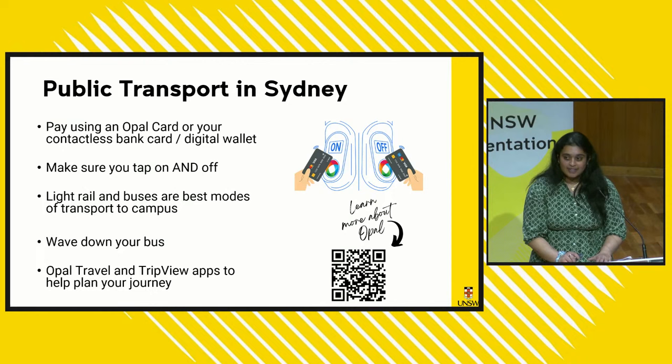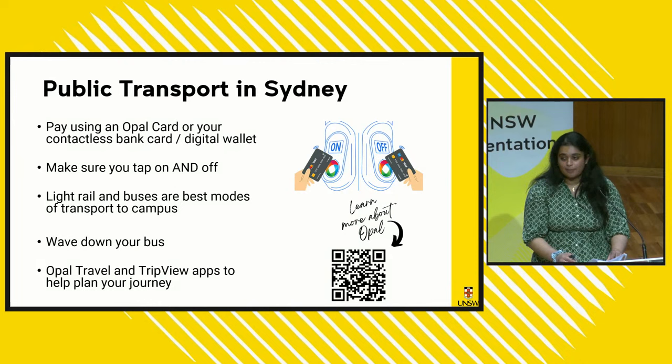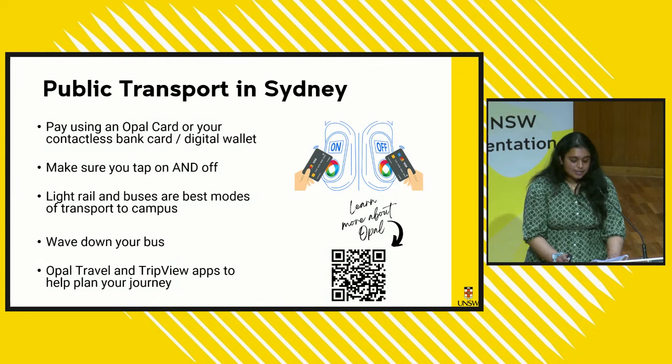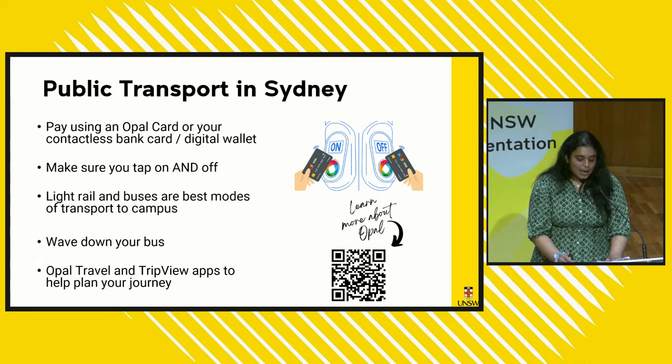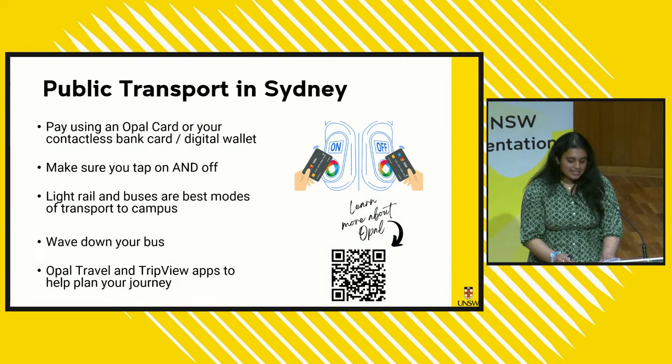Make sure you tap on and off every time, as failure to do so will result in a maximum charge for the day. You may also be fined by a transport officer if you do not tap on, as they can see your day's travel activity with their reader on an Opal card as well as your bank card. Light rail and buses are the best modes of transport to campus — the L2 light rail will take you to upper campus and the L3 light rail will take you to lower campus. Make sure you wave down the bus that you would like to get on, otherwise it may continue on without you. You will need to indicate to the driver that you would like to get on.